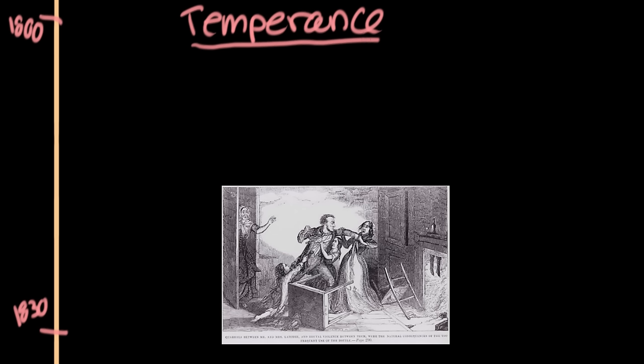Temperance was the idea that Americans drank way too much alcohol and needed to temper their consumption. It started as kind of this idea that people should just drink a little bit less — less whiskey, less rum, less hard alcohol. And then slowly, it started to take on this kind of prohibitory character. So again, it was the idea that we just needed to temper our alcohol consumption.